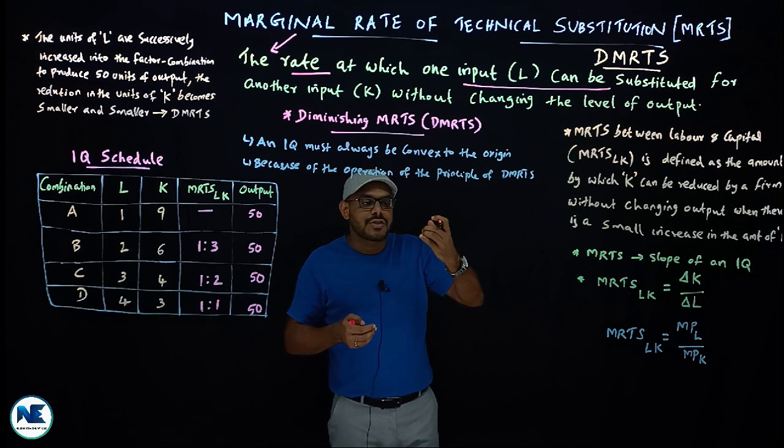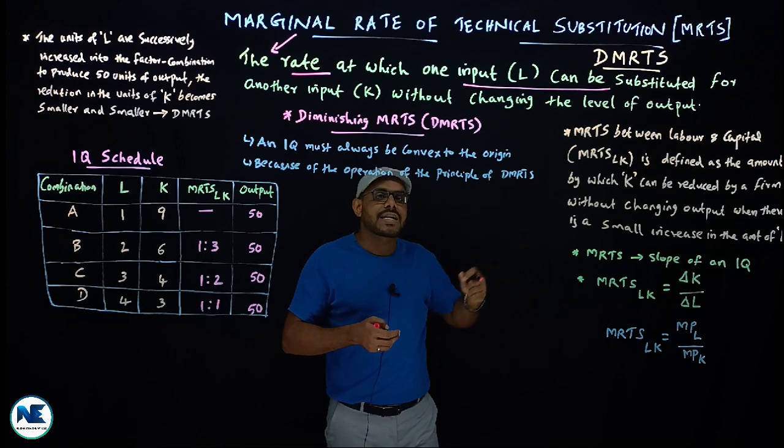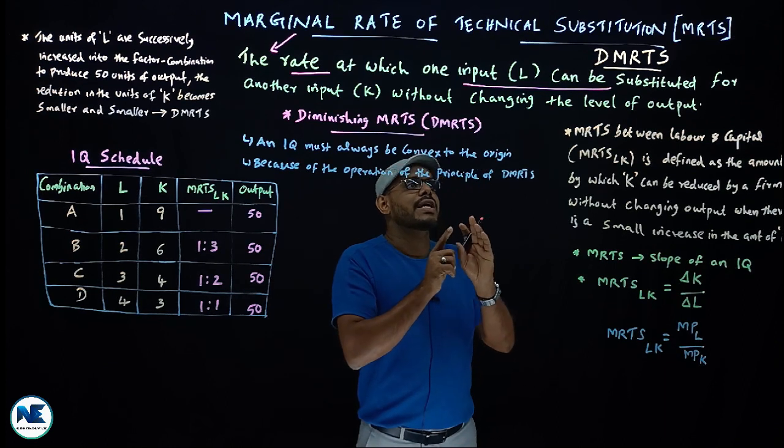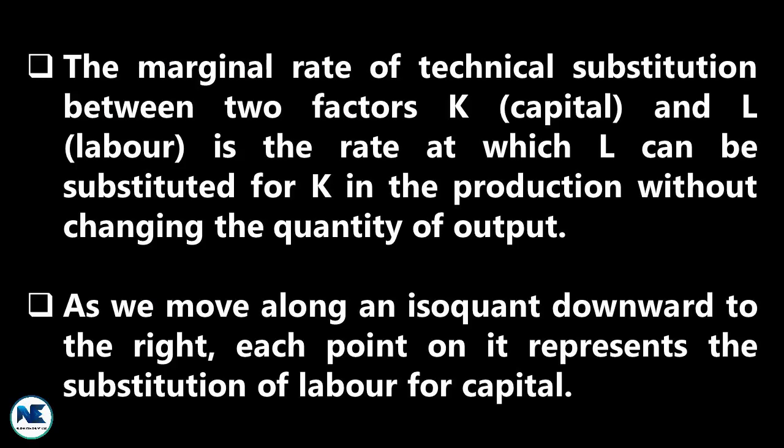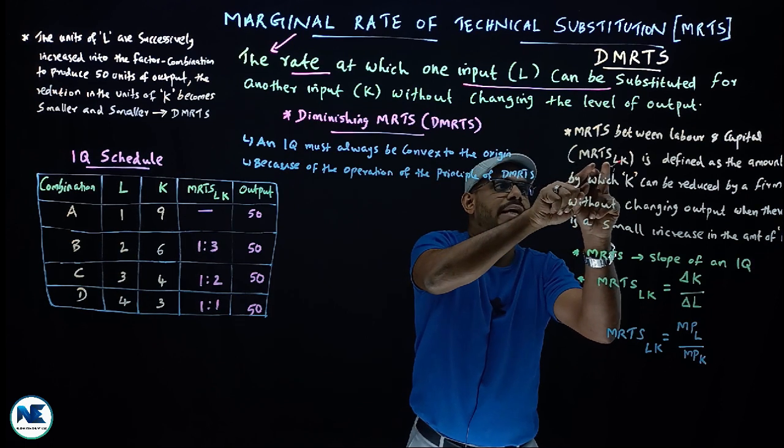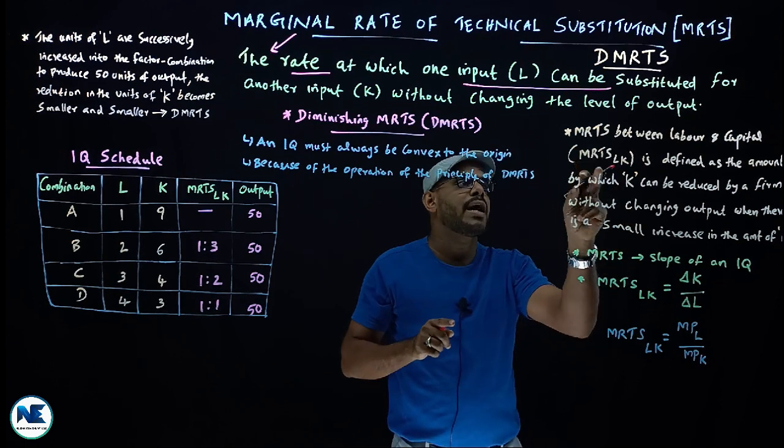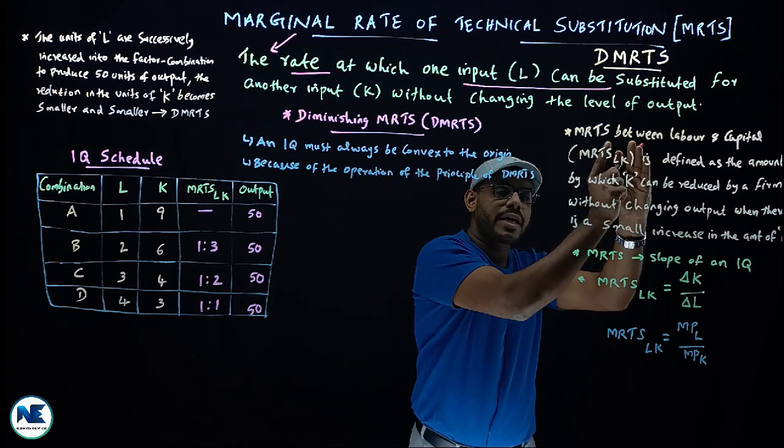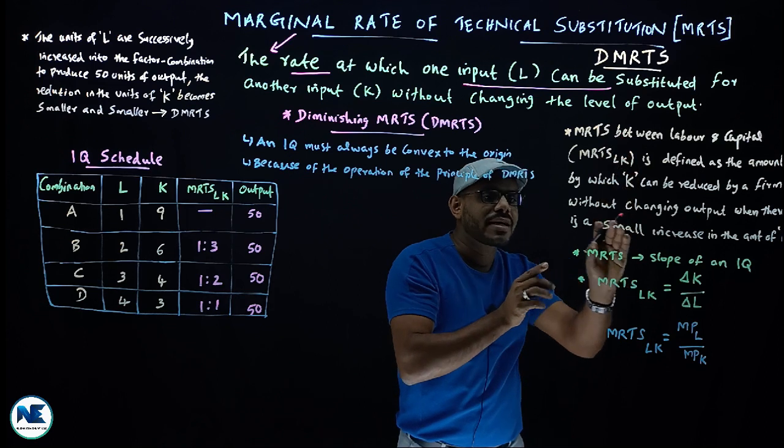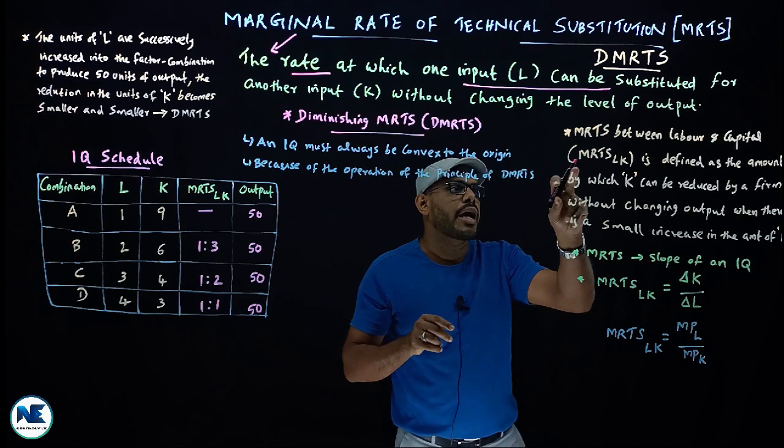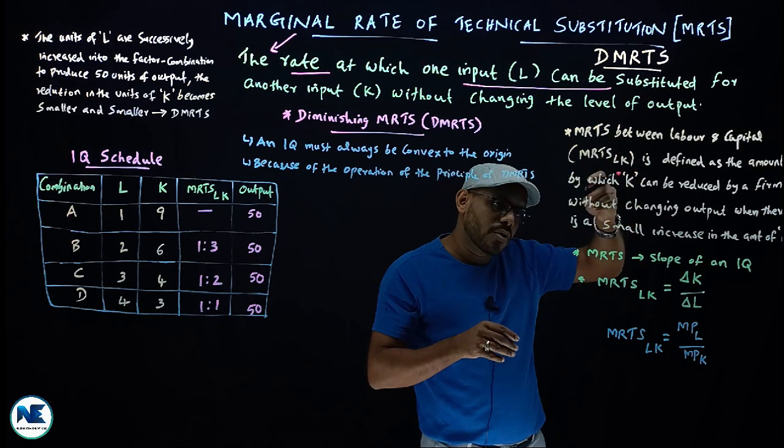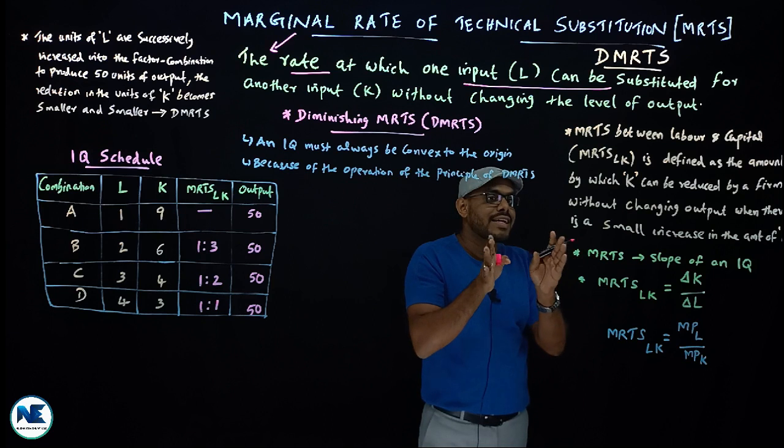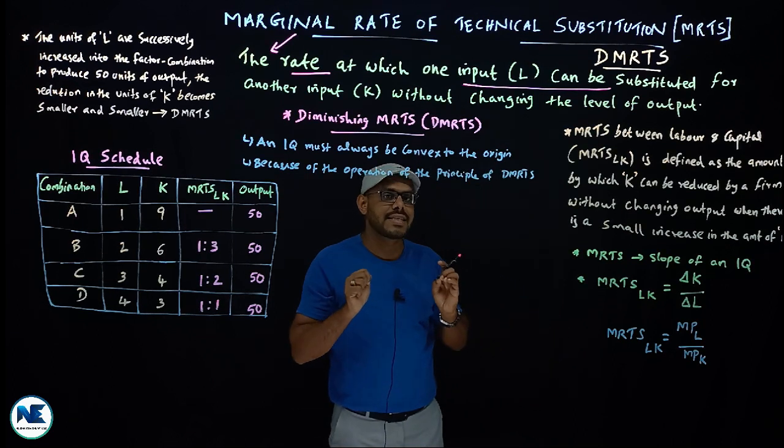Labor and capital are factors of production. Without changing the level of output, the marginal rate of technical substitution between labor and capital (MRTS_LK) represents how capital reduces when labor increases. We are substituting capital for labor.